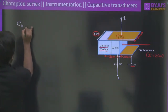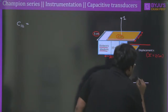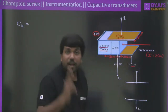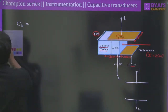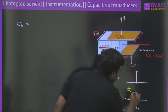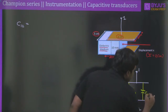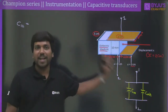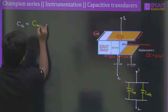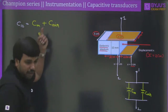So C₁₂ equals the capacitance due to the dielectric medium (Cₘ) plus the capacitance due to air (C_air). Both capacitors share the same gap D = 1 cm, but have different areas: the air portion covers 2 cm × 5 cm, and the dielectric portion covers 3 cm × 5 cm.